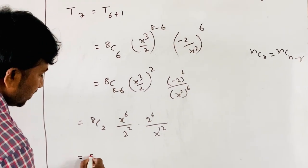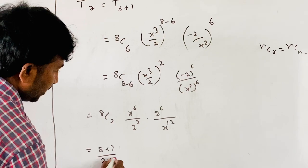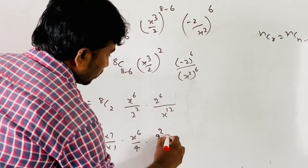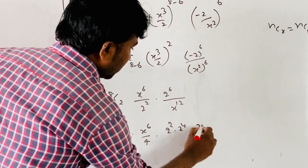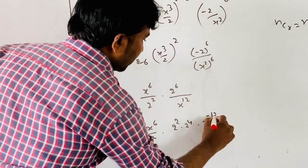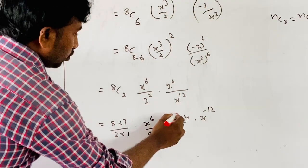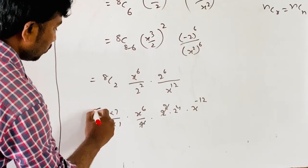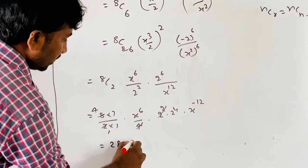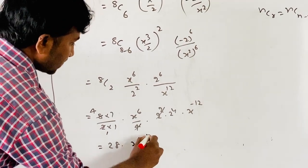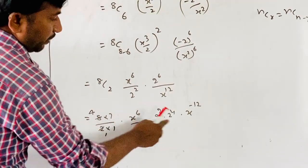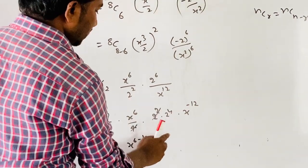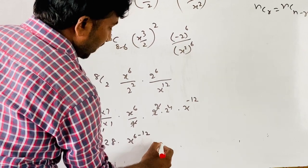Continuing: T7 = 28 * (x^4/4) * (64/x^12). The 4 in the denominator and the factor of 4 from 2² cancel appropriately. Simplifying the powers of x: x^4 / x^12 = x^(-8). Wait — combining: 28 * x^4 * 2^6 / (4 * x^12) = 28 * x^(4-12) * 64/4 = 28 * 16 * x^(-6).